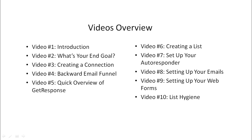We're going to jump right in and talk about how to create a list — the different types of lists, like single opt-ins and double opt-ins, which one's better for you, and different scenarios when each is better. That'll be video six. Video seven, we'll talk about setting up your autoresponder series. Video eight, we'll talk about setting up your emails. Video nine, we'll talk about setting up your web forms.